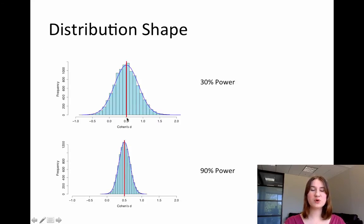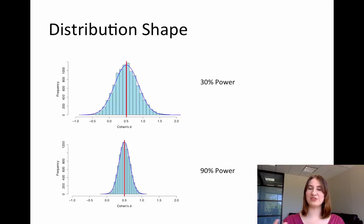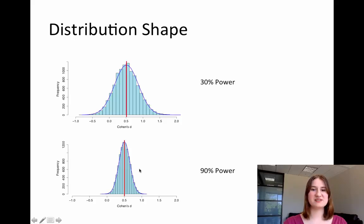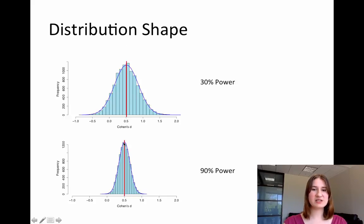To give you an idea of how it affects shape, here are two distributions. The one at the top is the distribution corresponding to samples with 30% power — drawing samples of a particular size to get 30% power each time. The one on the bottom represents samples with 90% power. The red line, which is at the mean, is basically in the same place for both of them, right at that 0.5 true effect size.